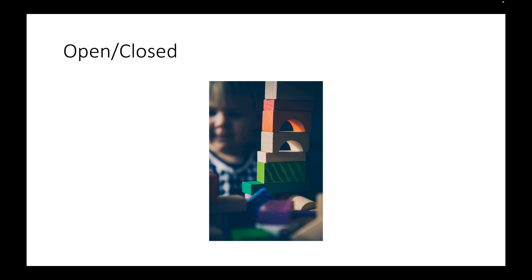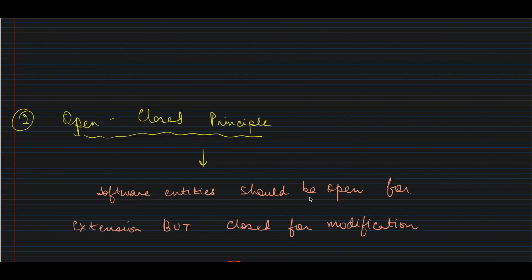That is the core idea of the Open Closed Principle: if you've built something already and you want to add new features to it, don't try to modify the existing structure — keep adding new functionality without affecting what you've already built. The definition is: a software entity should be open for extension but closed for modification.